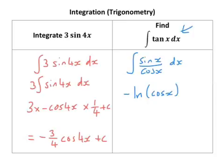And that's one of those chain rule backwards type things. So if I was to differentiate ln of cosine x, I'd end up with minus sine over sine x over cos x.